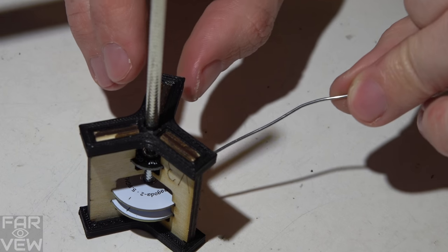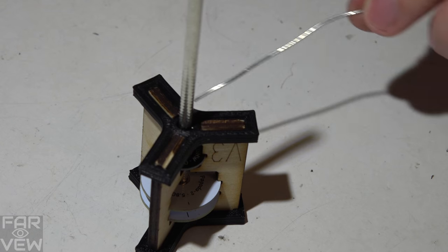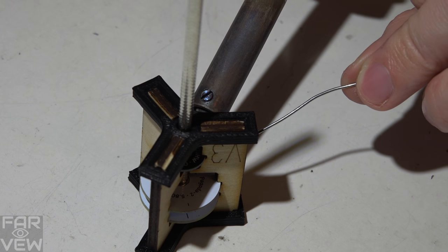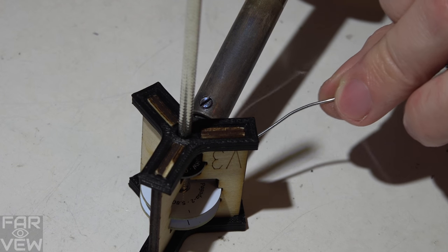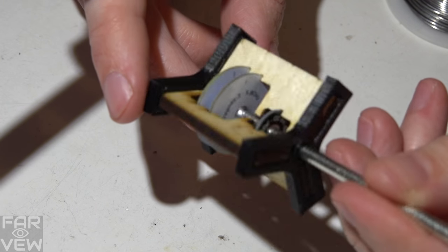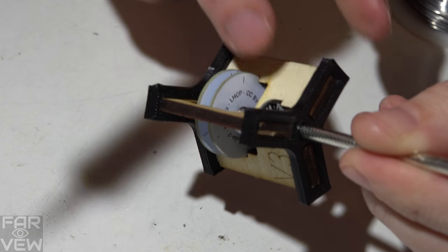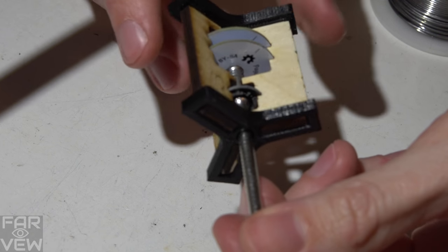I will now solder the second PCB to the coax cable, doing it exactly how we did it on the very first PCB. Okay, that's looking pretty good. Now let's do the small PCB. Okay, and it should look something like this.